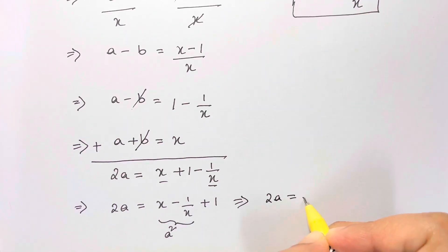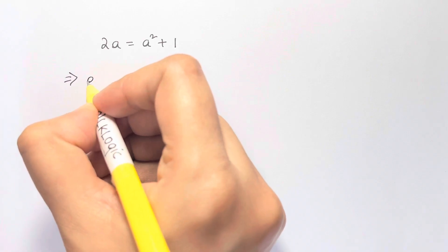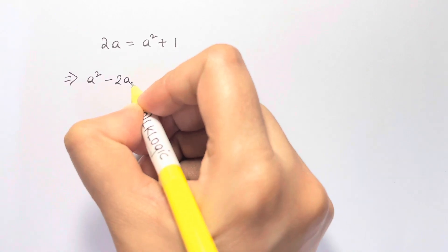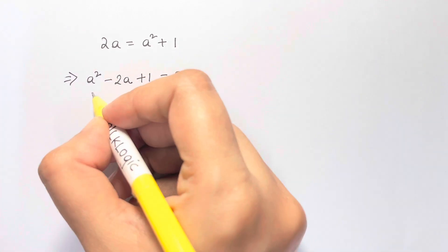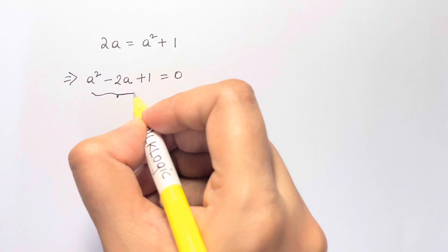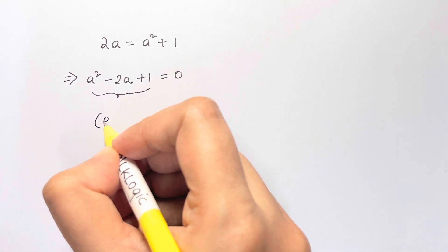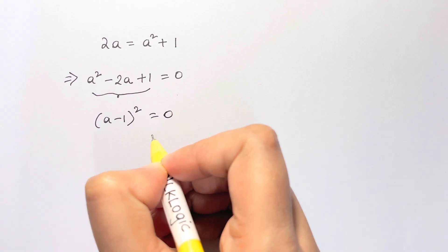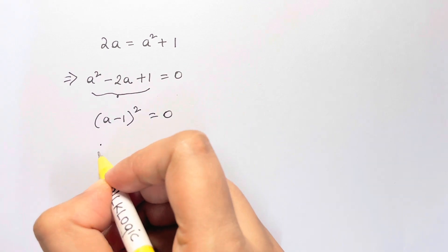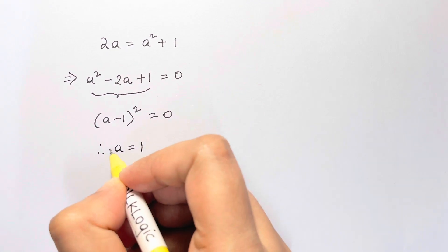So we get 2a equals a squared plus 1. Bringing all terms to one side: a squared minus 2a plus 1 equals 0. This is the perfect square identity (a minus 1) squared equals 0, so therefore a equals 1.